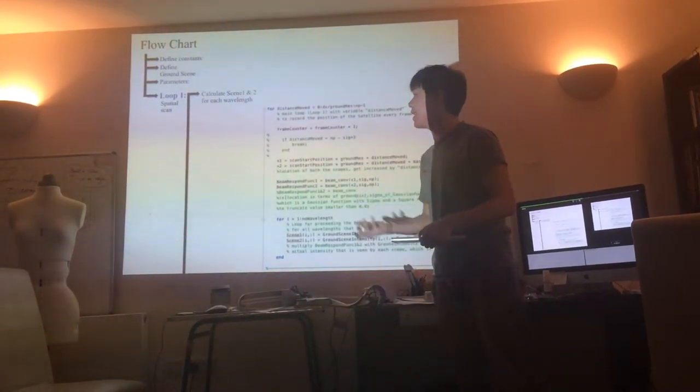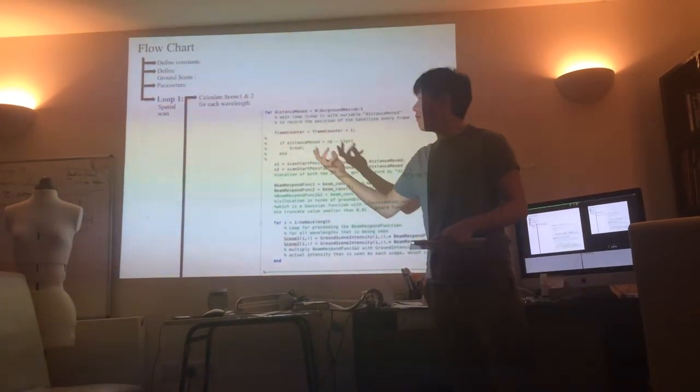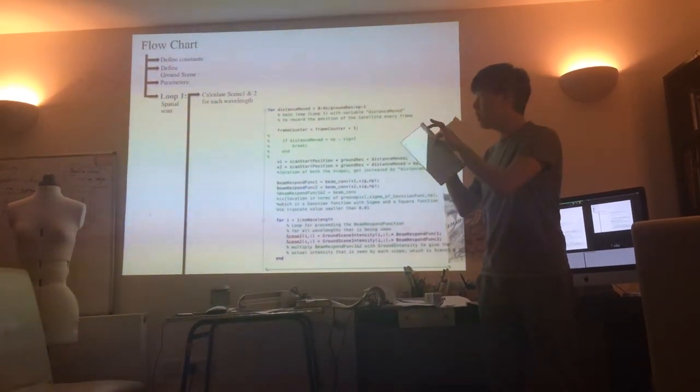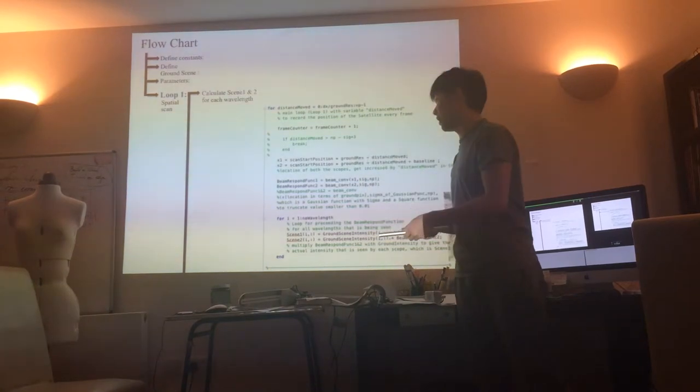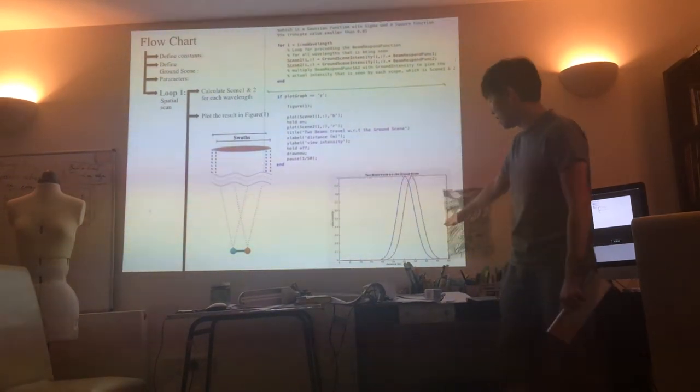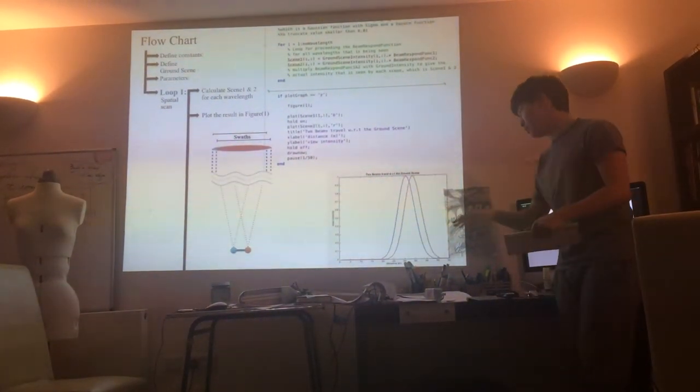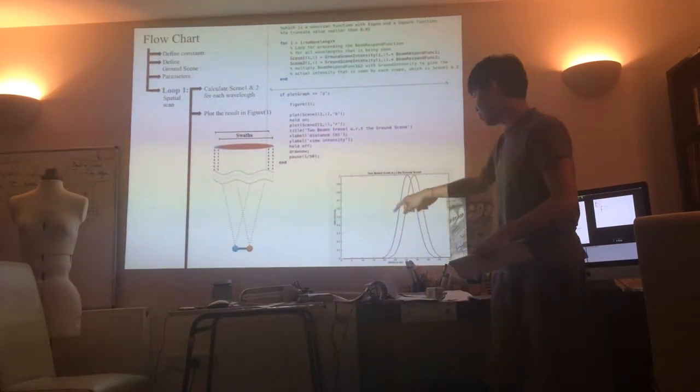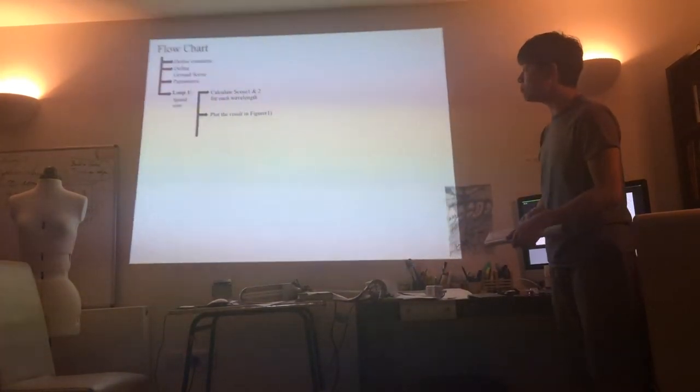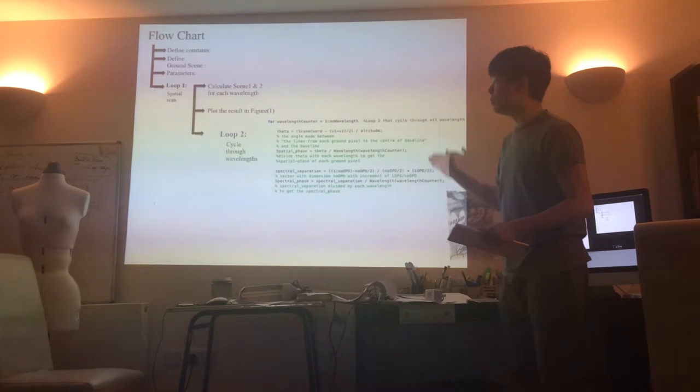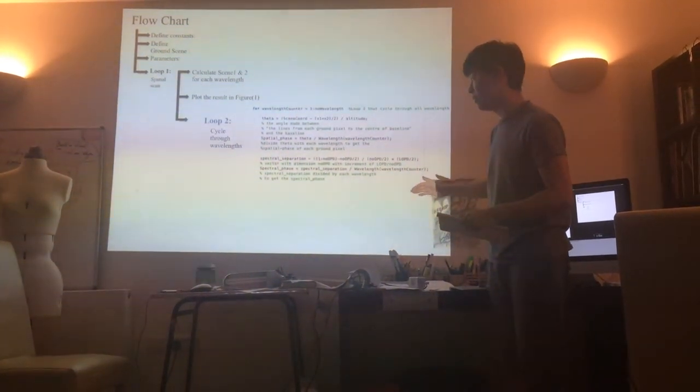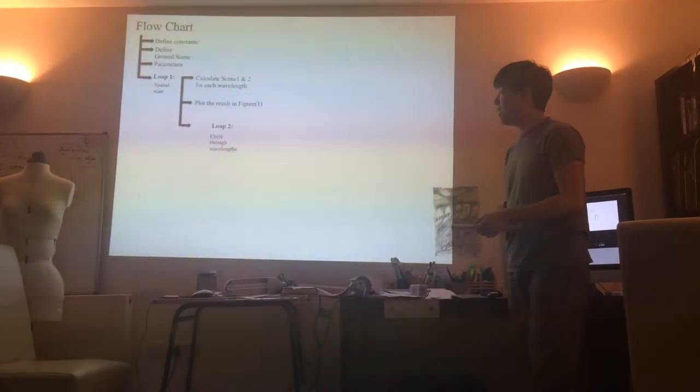Now we're going to the actual scan. Loop 1, we define a spatial scan which first defines the two beams, the two scenes my two telescopes are looking at. If we plot the result out, this is what we're going to get. The blue beam being the blue scope and the red beam being the red scope. You can see they are simulated to be a Gaussian function. Now we go to loop 2, which cycles through all the wavelengths. Here I've defined the spatial phase and the spectral phase.